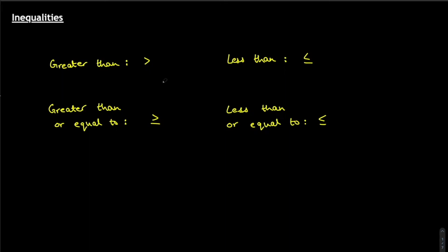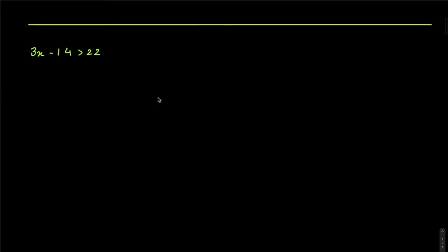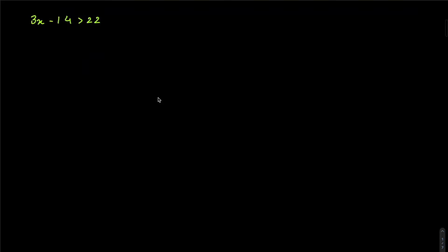Let's get started with an example. The first example is 3x minus 14 should be greater than 22. We solve it like a normal equation — add 14 to both sides to get 3x is greater than 36, so x is greater than 12. That's our inequality.